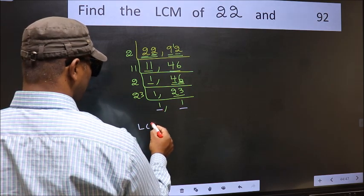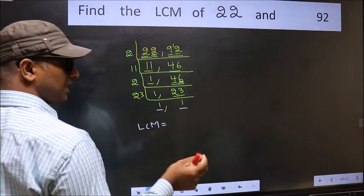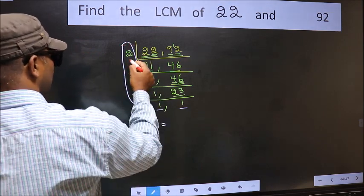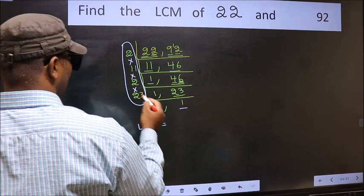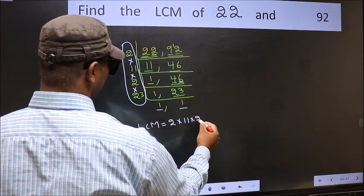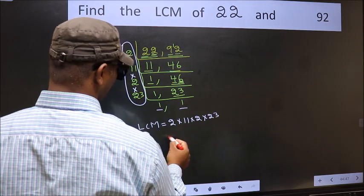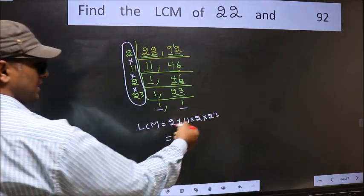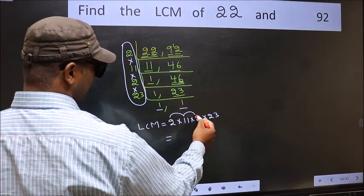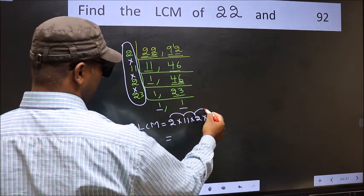So our LCM is the product of these numbers: 2 into 11 into 2 into 23. Let us multiply these numbers. 2 into 11 is 22, into 2 is 44, into 23.